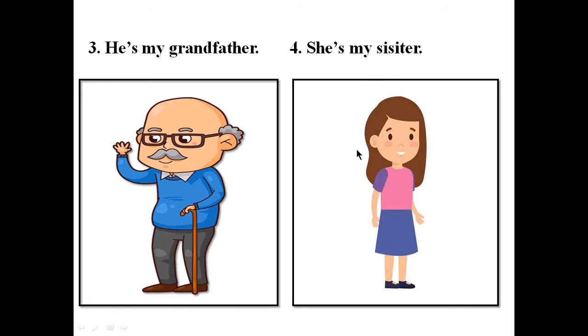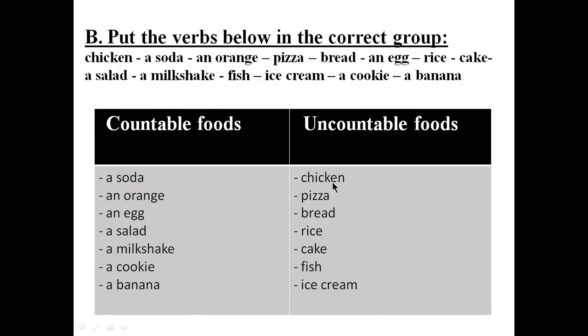Okay guys, let's move to the B. Here you put the verbs below in the correct group. So we are going to put this word in the number, what you see here. We have countable foods and uncountable foods.